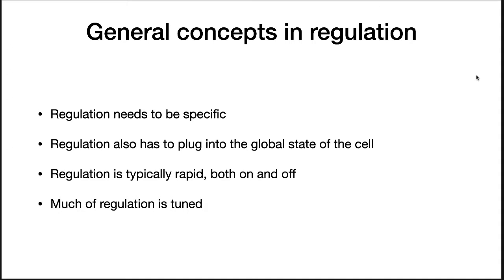If the cell encounters lactose, it will want to turn on the lactose catabolism genes, not the xylose catabolism genes. Second, it has to plug into the global state of the cell. Even if a cell encounters lactose, it may still not turn on lactose catabolism. What if glucose is present — a better carbon source? If so, the cell won't waste time expressing lactose catabolism genes.